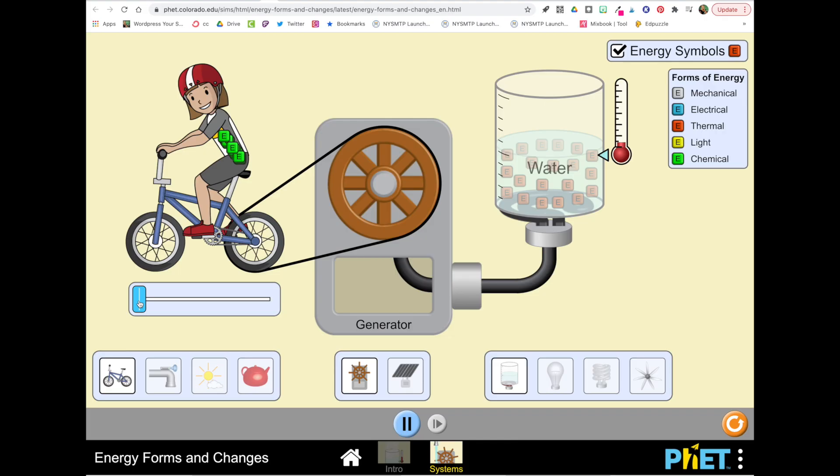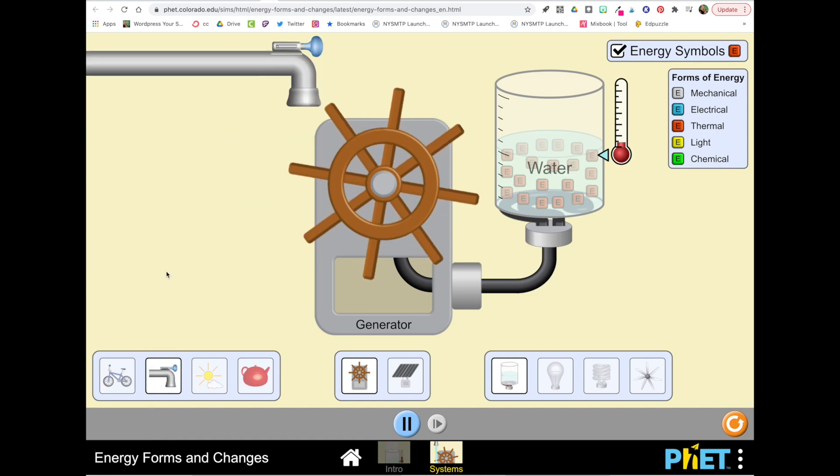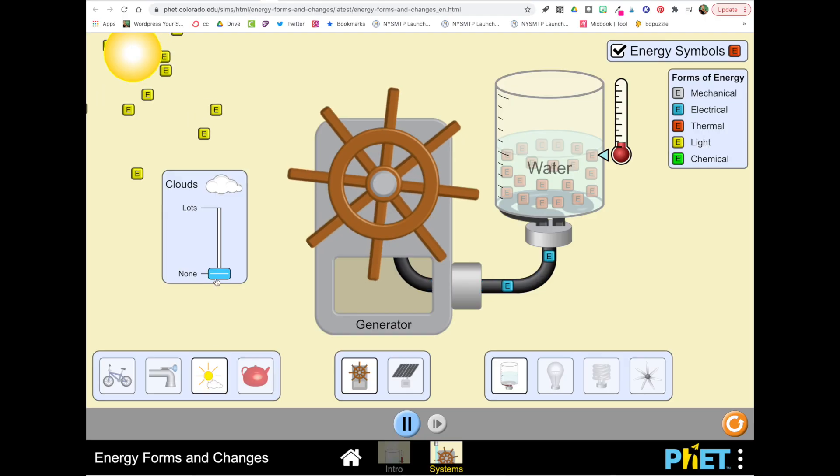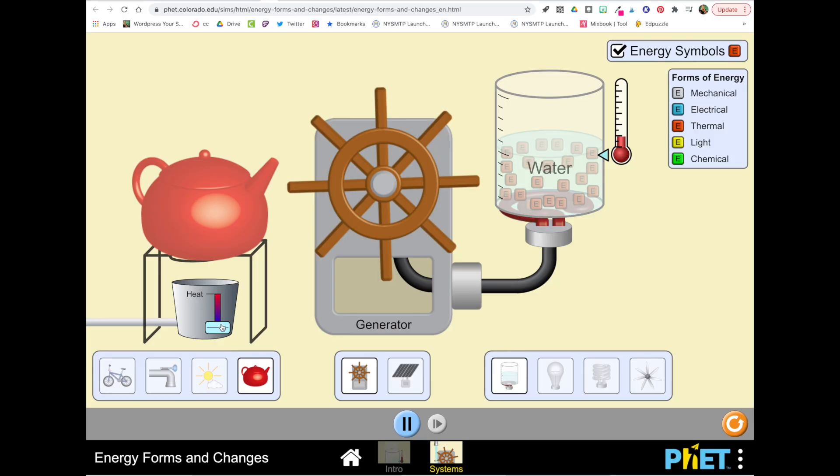The default mode shows a girl on a bicycle, yet if I click this water spout I can turn the water spout on and add it to the system in place of the girl on the bicycle. Each time you add something to the system you have the ability to turn it on and off. The next item I can add is a sun and I can change the amount of clouds in front of that sun. And then finally there's a teapot and I can change the amount of heat added to that teapot.